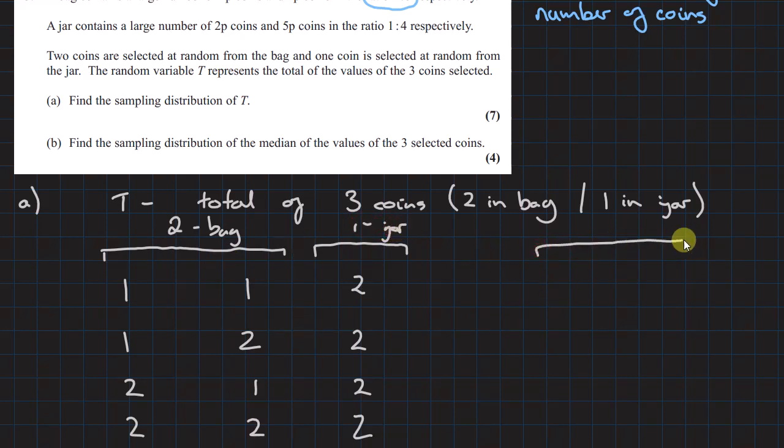And what we've got over here is 1, 1, 1, 2, 2, 1, 2, 2 and now we've got jar and all of those are 5s. They're all possibilities that can happen from this situation. So let's calculate the T's for each of them. The total for that is 4, the total there is 5, 5 and 6. We've got a 7, an 8, an 8 and a 9.